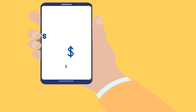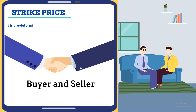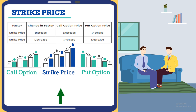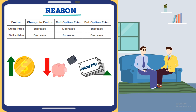What about the strike price? The strike price is the predetermined price at which a trader is willing to buy or sell an option. When the strike price increases, the price of call options decreases and the price of put options increases. The reason is that when the strike price increases, the payoff for call option holders decreases, and the price of the option must decrease to offset this lower payoff.